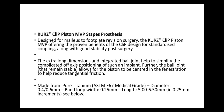The Kurtz Clip MVP Stapes Prosthesis is designed for malleus-to-footplate revision surgery. The Kurtz Clip Piston MVP offers the proven benefits of the clip design for standardized coupling along with good stability post-surgery. The extra dimensions and integrated ball joint help simplify the complicated off-axis positioning of such an implant. The ball joint allows the piston to be centered in the fenestration to help reduce tangential friction. Made from pure titanium, the diameter is 0.4 to 0.6 mm, the band loop width is 0.25 mm, and the length ranges from 5 to 6.5 mm in 0.25 mm increments.